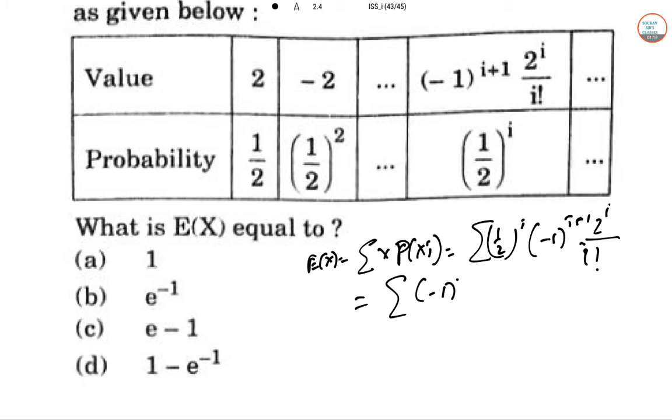This is summation of minus 1 to the power i plus 1 over i factorial: 1 minus 1 by 2 factorial plus 1 by 3 factorial and so on. This is actually the expression for e to the power minus 1, so option b is correct.